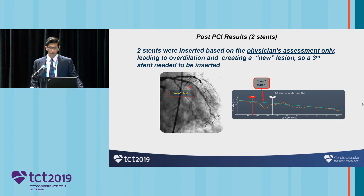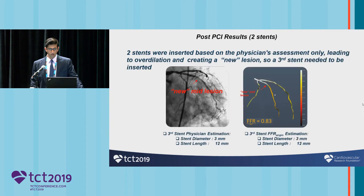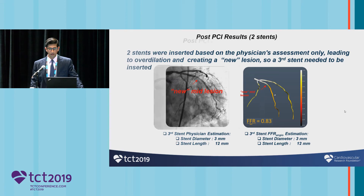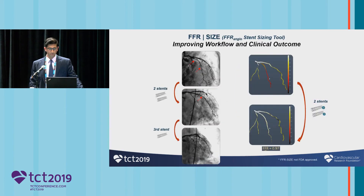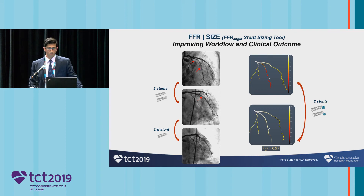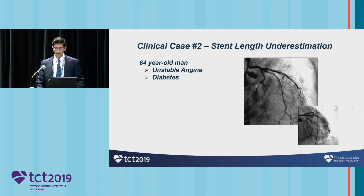Two stents were inserted based on the physician's assessment, and the stents were clearly oversized — we often see the creation of a new lesion between the two. A third stent was needed to ensure a satisfactory final angiographic result. After stenting that mid-lesion, the FFR was 0.83, and after placing the stent between the two initial stents, 0.97 — so arguably an unnecessary third stent. Utilizing this tool to size the vessel and assess lesion length will improve workflow, efficiency, and potentially the economic impact.